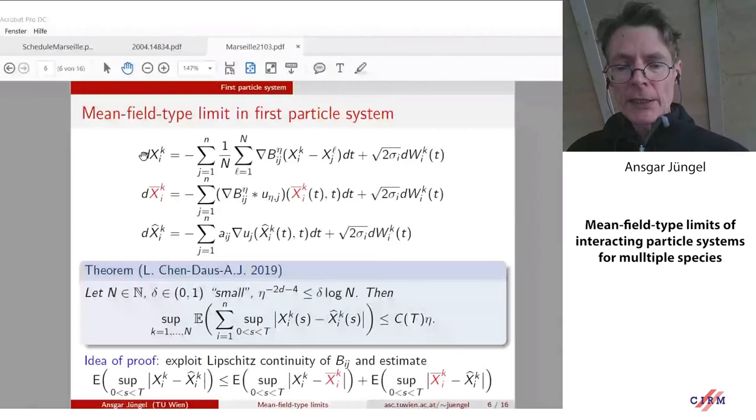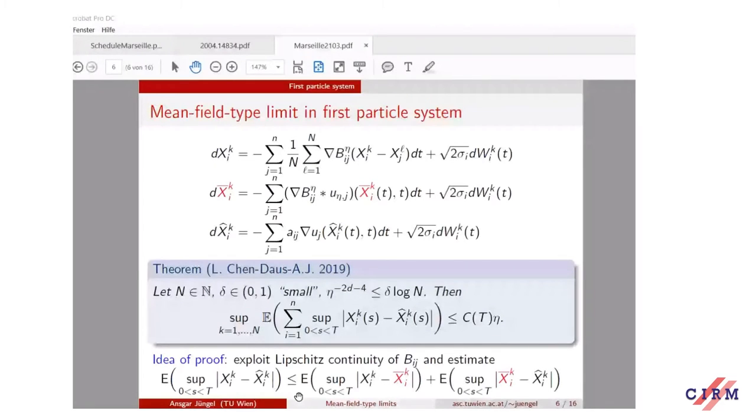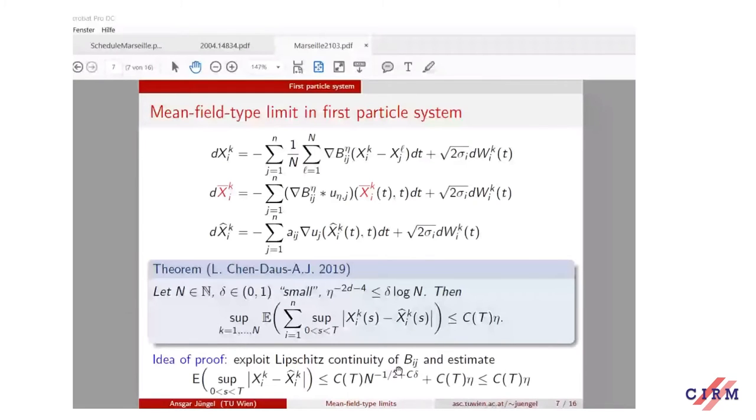We can do this on a rigorous level. This is joint work with Li Chen from Mannheim and Esther Daus from Jena. What we could prove is that whenever we have a certain relation between epsilon and N, then we can prove that the difference of the original system and the macroscopic system in some norm—that means I have this norm with respect to time and the expectation with respect to the stochastic level—is given up to a constant times epsilon. Here capital T is just the time. The proof is really to exploit the continuity of the interaction potentials and estimate the difference between the three systems using triangle inequality.